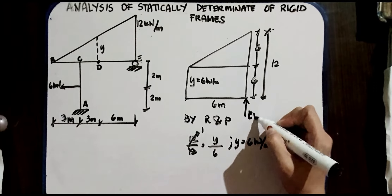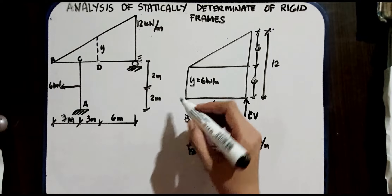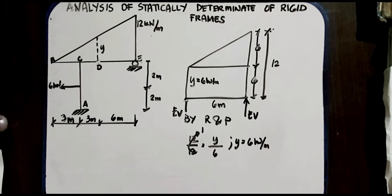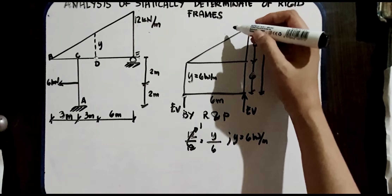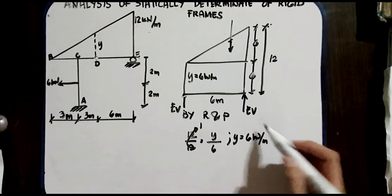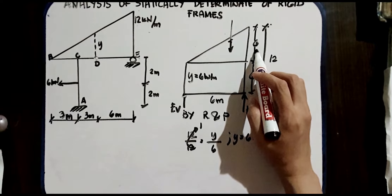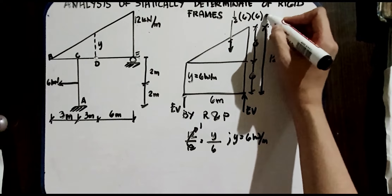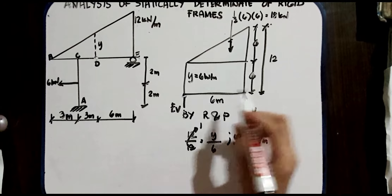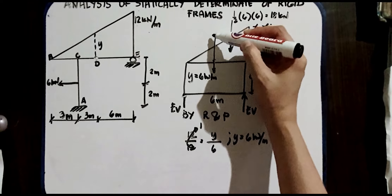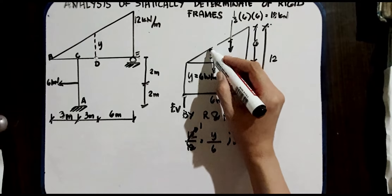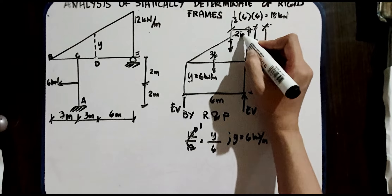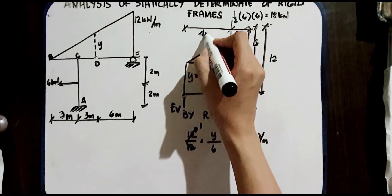This is EV. By finding the resultants: the first triangle resultant is 1/2 × 6 × 6 = 18 kN. The rectangle is 6 × 6 = 36 kN. The distance for the triangle is 1/3 of 6, which equals 2 meters, and 2/3 of 6 equals 4 meters. To find EV, we use summation of moments at D equal to 0.